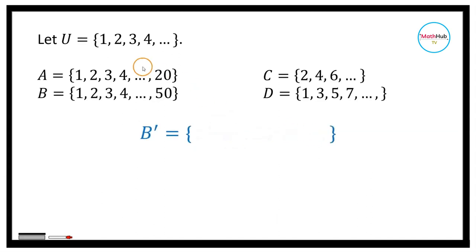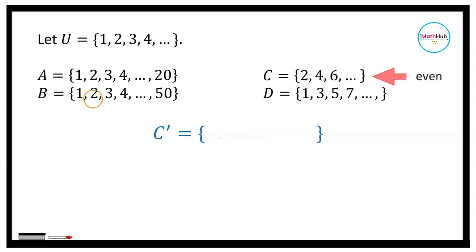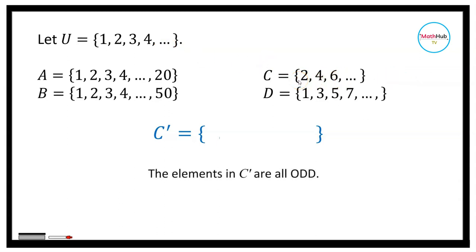The universal set here is the set of natural numbers. For the complement of B, we take everything in the universal set that is not in B, so that is 51, 52, 53, 54, and so on. For C prime, since C contains all even numbers — 2, 4, 6, 8 — the complement of C will be the set of odd numbers: 1, 3, 5, 7, 9, and so on.